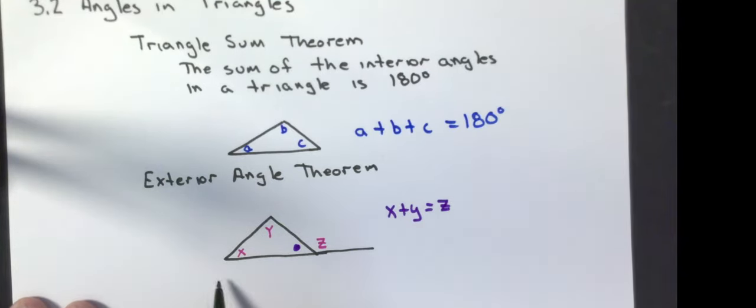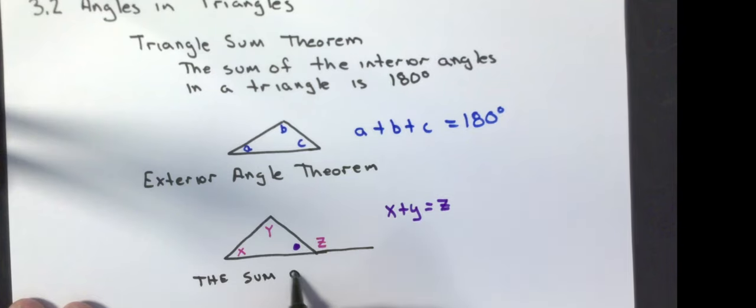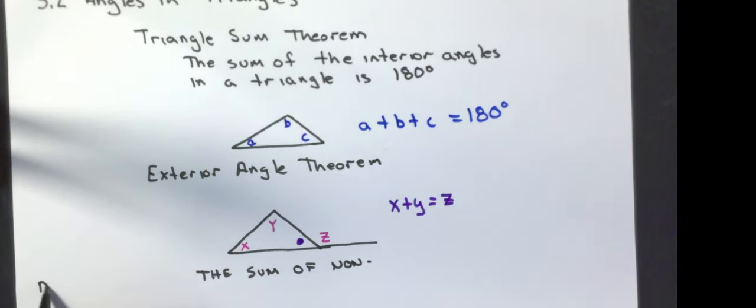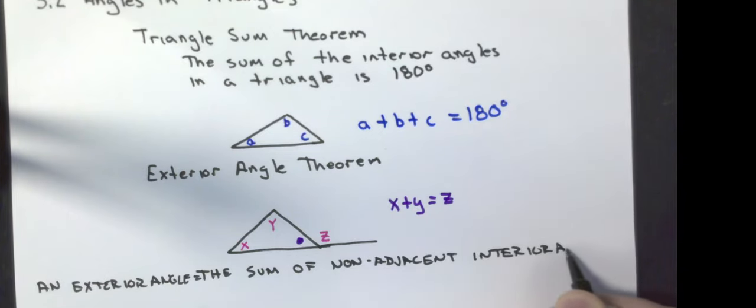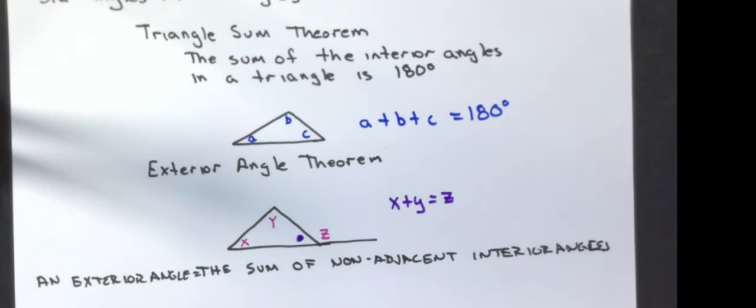And the way that your book states it, it actually states that an exterior angle equals the sum of the non-adjacent interior angles. So we have two facts that we need to do our work for this.